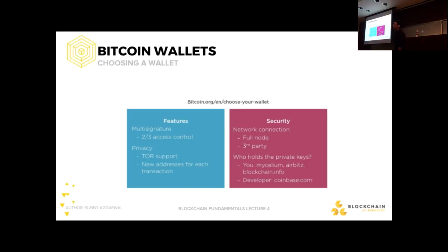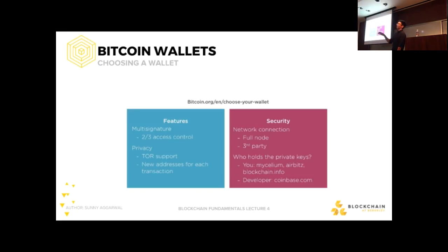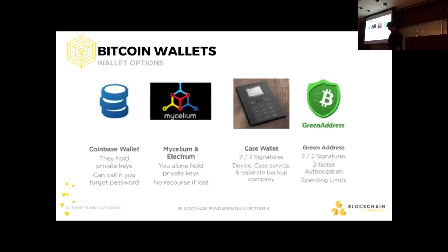When choosing a wallet, online web wallets like Coinbase store your private key on a third-party cloud server. If Coinbase goes down, your private key goes with it and you lose your funds. On the other hand, you might be clumsy and lose your own key, so you may want to delegate that responsibility to Coinbase. Do your own due diligence and find a wallet that works for you. There are wallets with extra features like multi-signature and extra privacy. Some options include Coinbase, Mycelium, and Electrum.